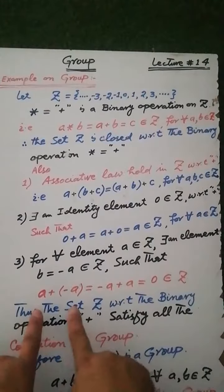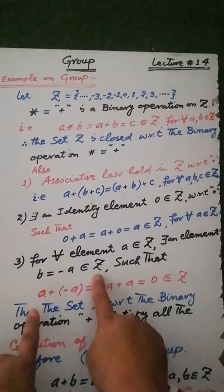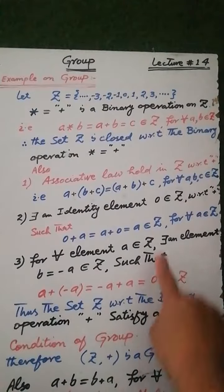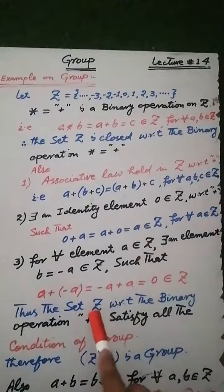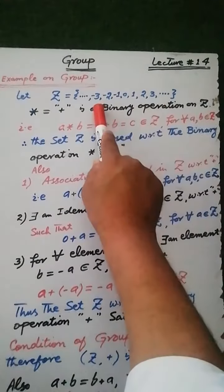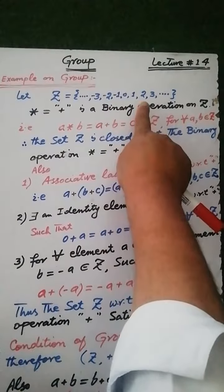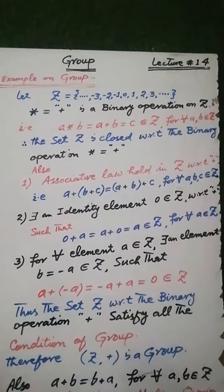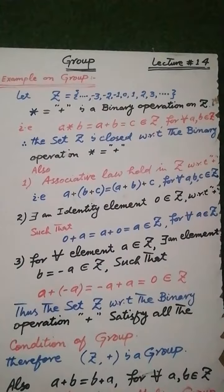For each integer a, there exists an additive inverse −a in the set Z such that a plus (−a) is equal to (−a) plus a is equal to zero, where zero is the additive identity element. That is, for element 1 there exists −1, for element 2 there exists −2, for element 3 there exists −3, and so on, such that 1+(−1), 2+(−2), 3+(−3), and so on, each gives the identity element 0.